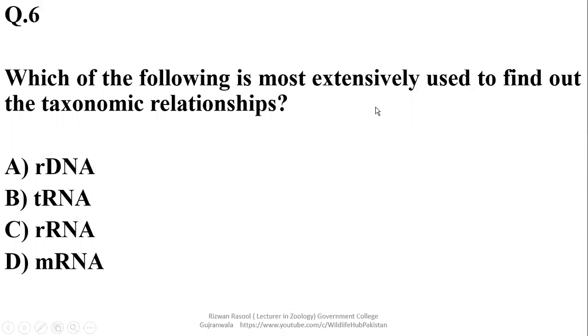Which of the following is most extensively used to find out the taxonomic relationship? Ribosomal RNA is a molecule which is thought to be conserved in the evolutionary history. That's why it is most commonly used molecule as compared to others, so right option in this case is Charlie.